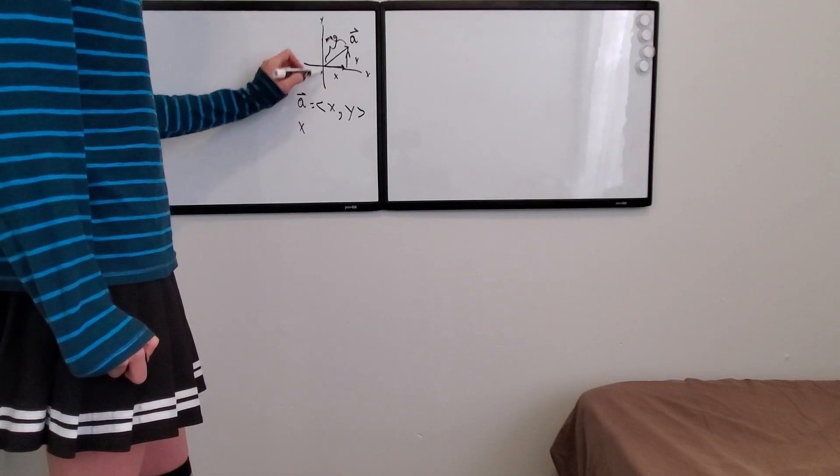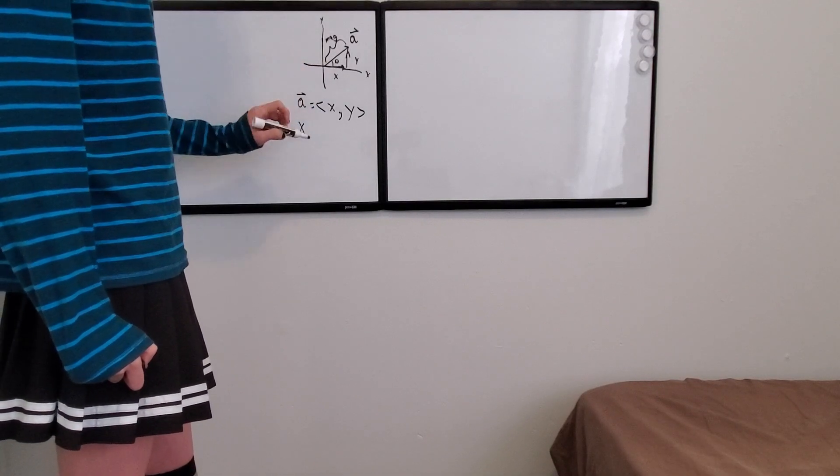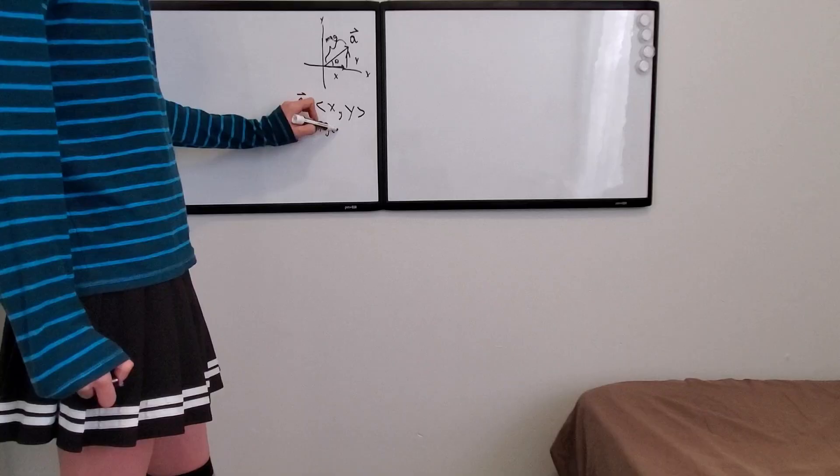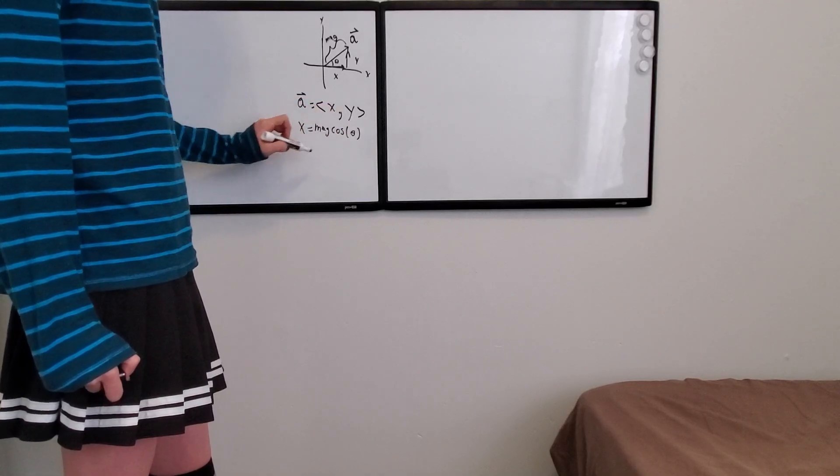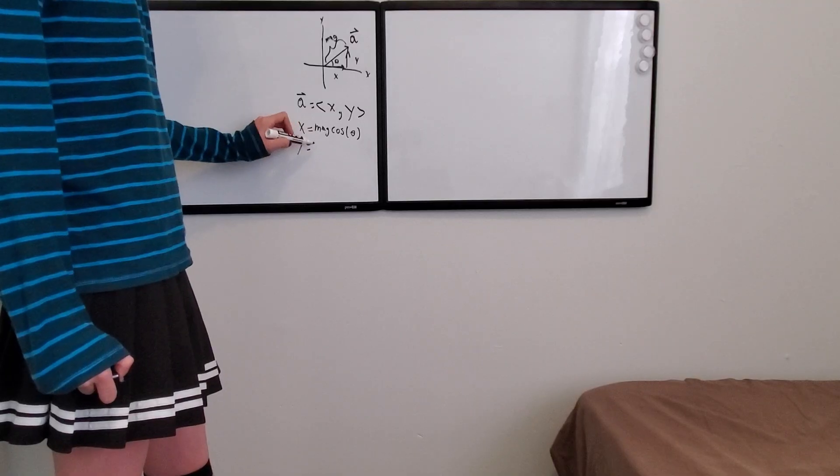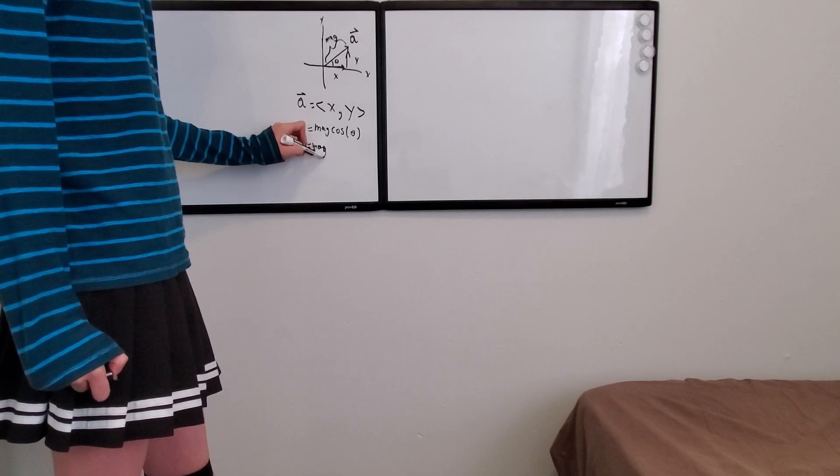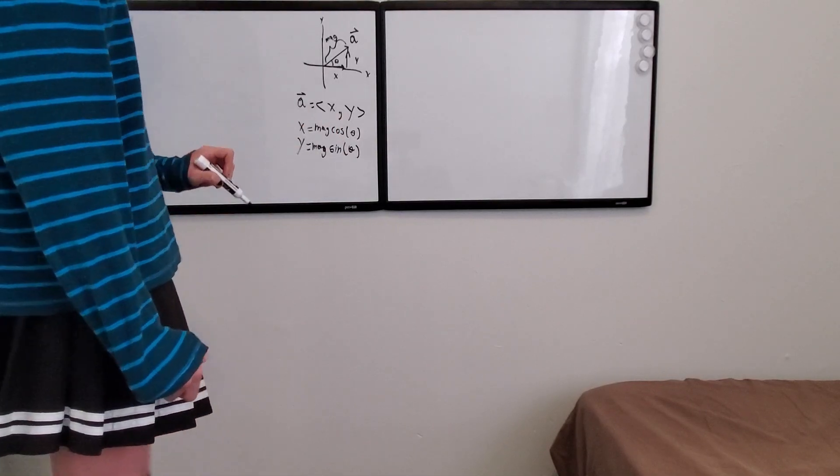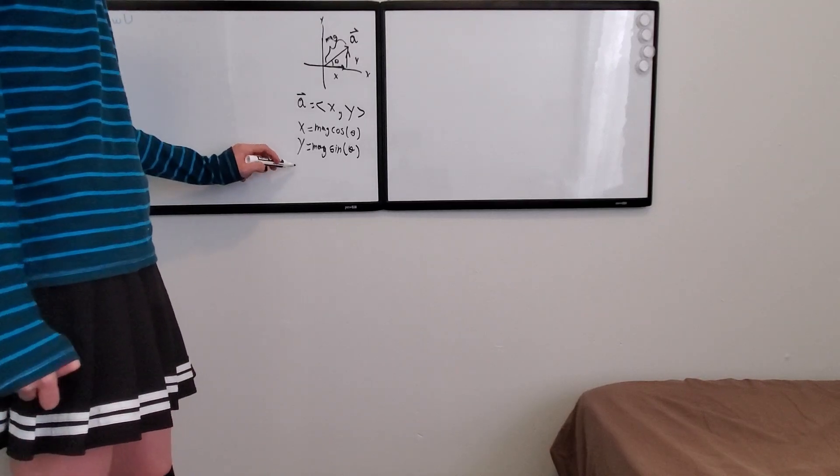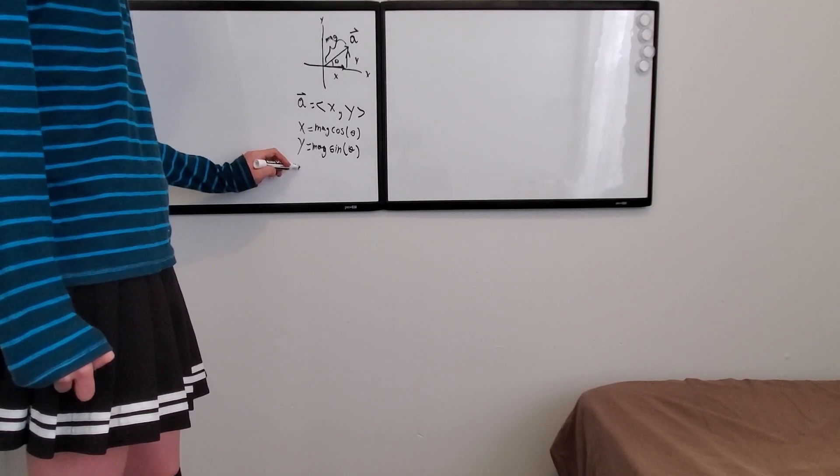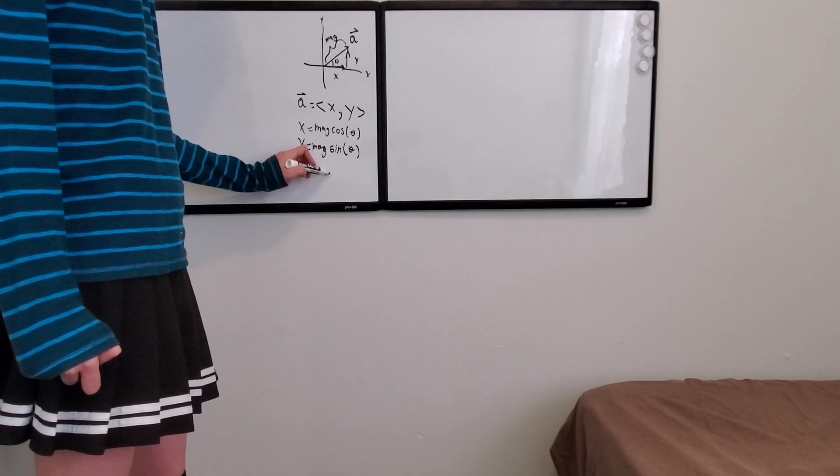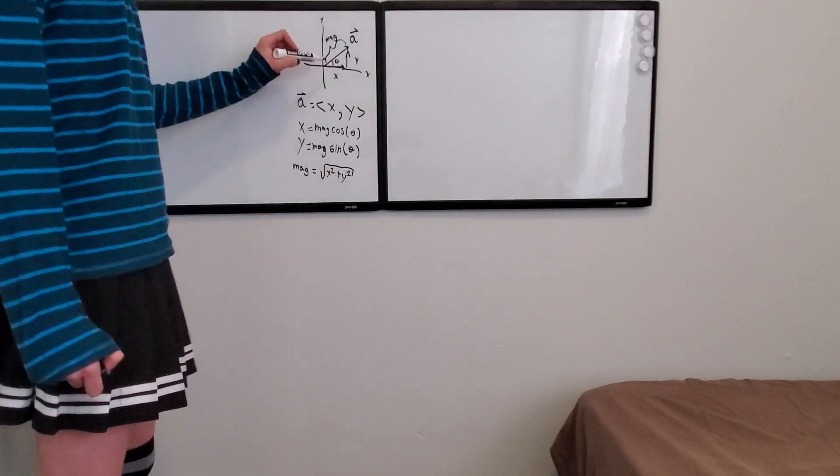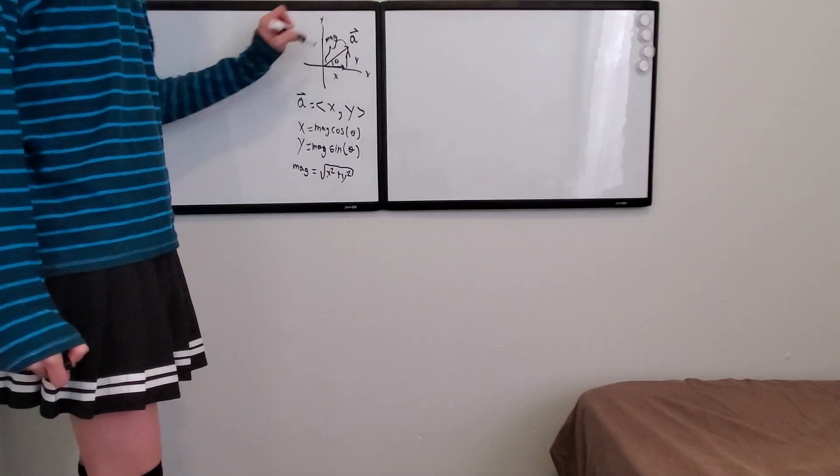The x component: let's have an angle here called theta. The x component is going to be the magnitude times cosine of the angle. And the y component is going to be the magnitude times the sine of the angle. If you have x and y, you can find the magnitude to be the square root of x squared plus y squared. That just comes from Pythagorean's theorem to find the hypotenuse.